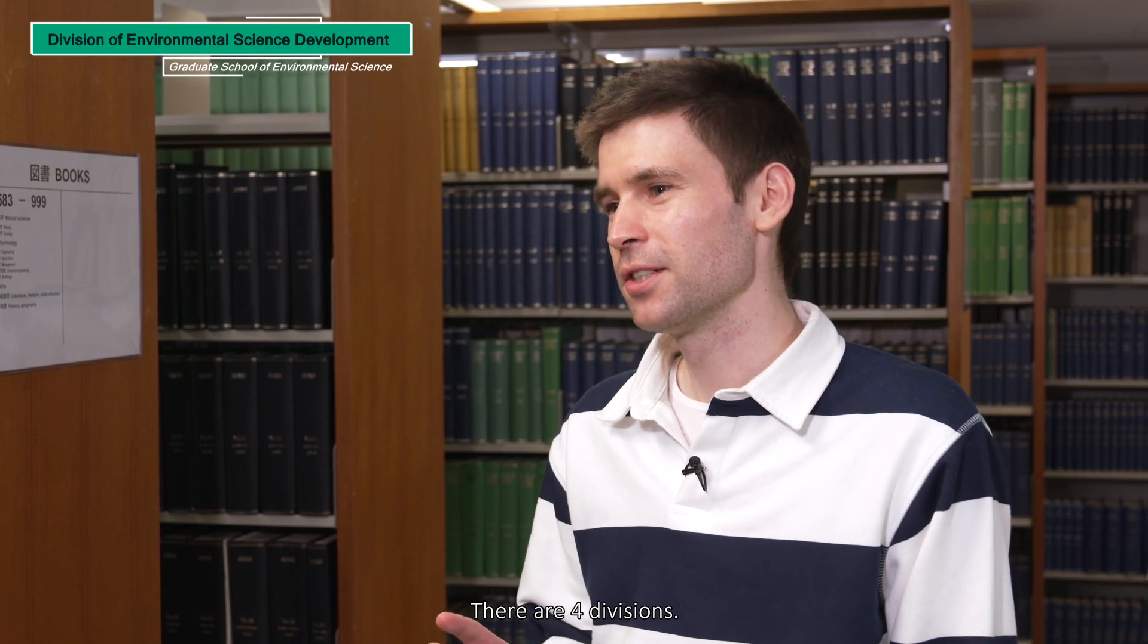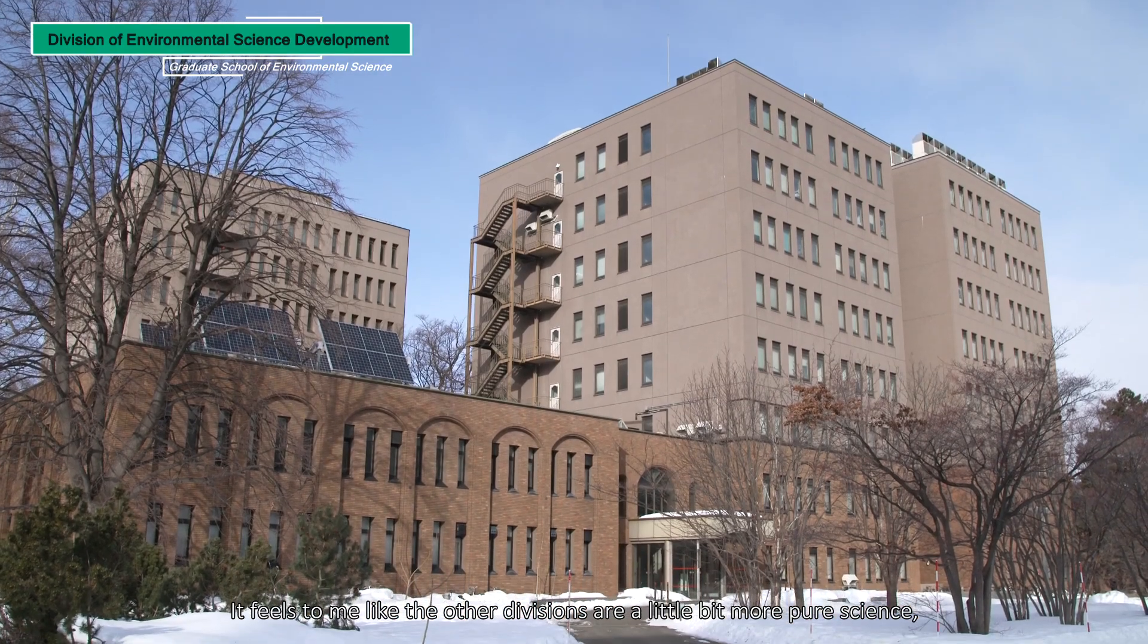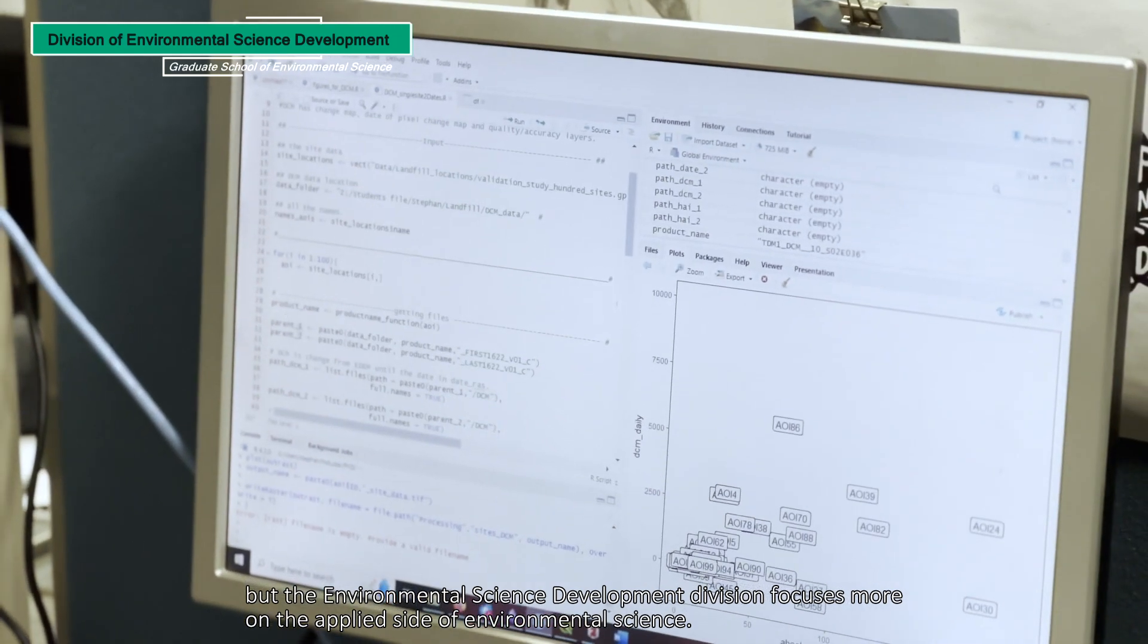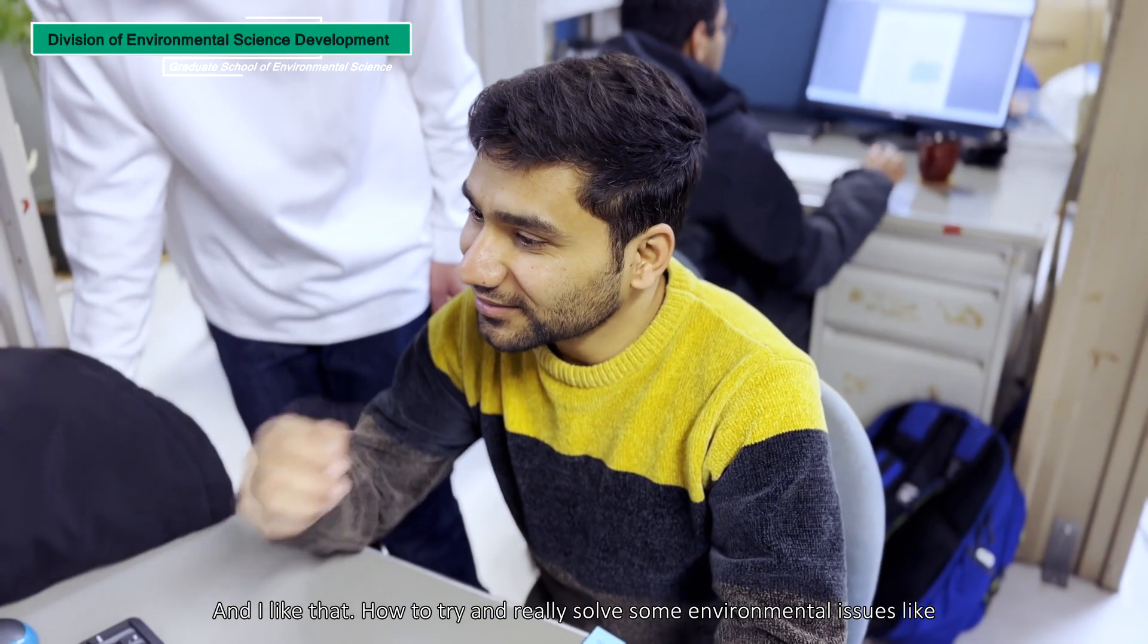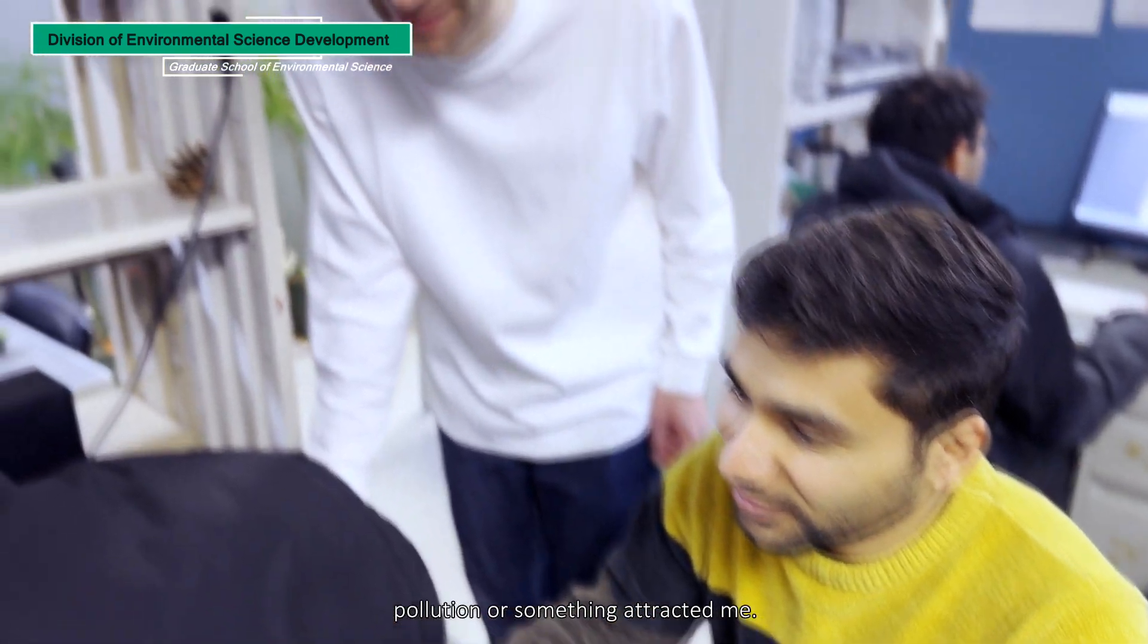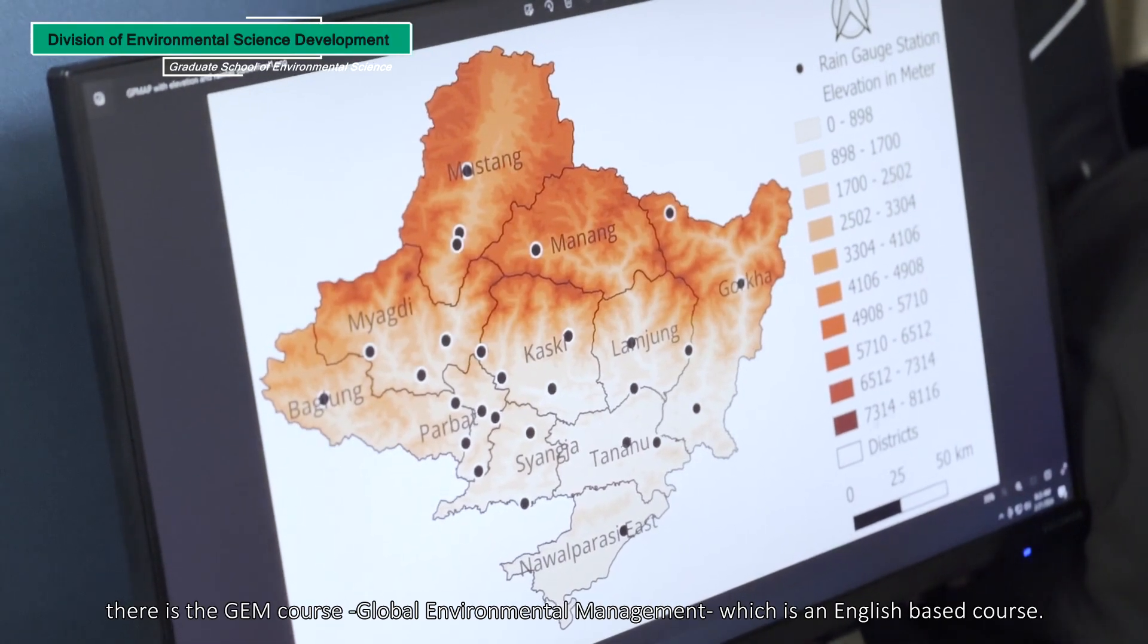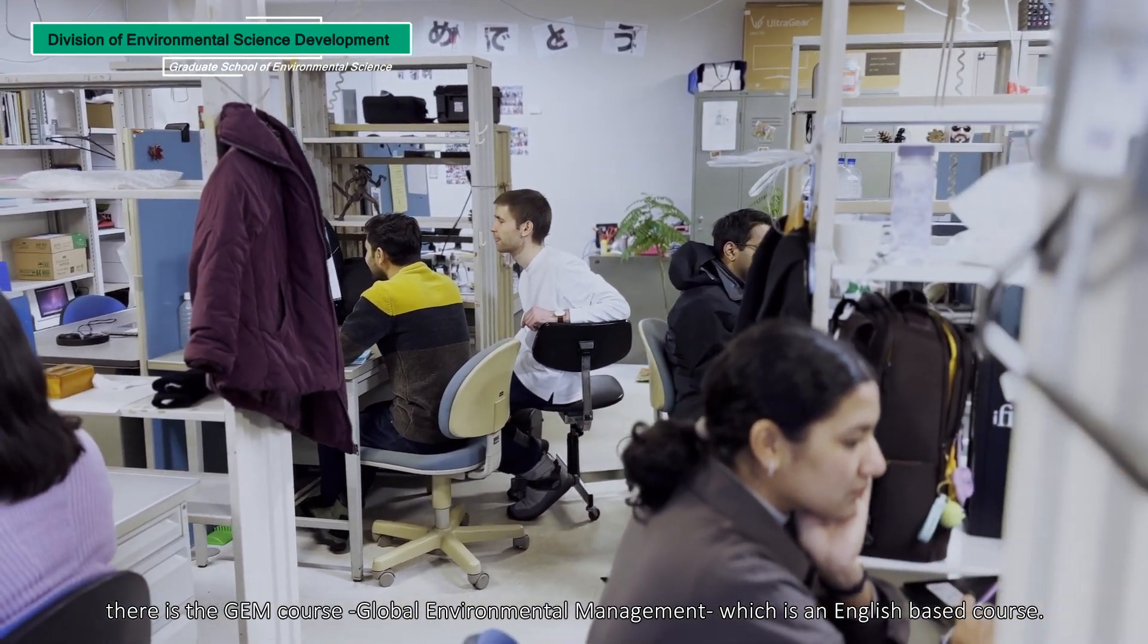There's like four divisions, but it feels to me like the other divisions are a little bit more pure science, but the Environmental Science Development Division focus more on the applied side of Environmental Science, how to try and really solve some environmental issue like pollution or something attracted me. And also because in the Division of Environmental Science Development there is the GEM course, Global Environmental Management, which is an English-based course.